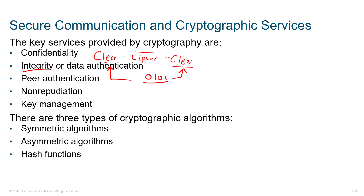Another piece that's just as important is peer authentication. If we can bypass authentication, we would have unauthorized access into that network. We can use things like a pre-shared key, two-factor authentication, digital certificates, or actually a mixture of these.